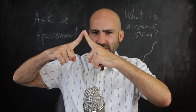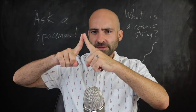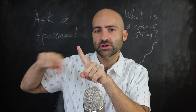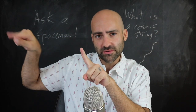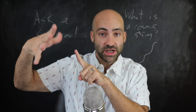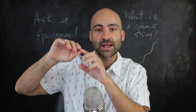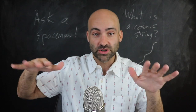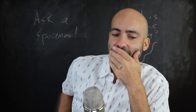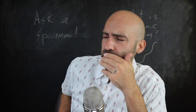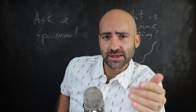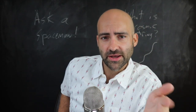Another way cosmic strings can go away is through cusps — really, really sharp points that travel along the string. As the cusp travels, it generates gravitational waves. Those gravitational waves pull energy out of the cosmic string, reducing its mass. This wiggling and gravitational wave emission is actually how we might detect a cosmic string.